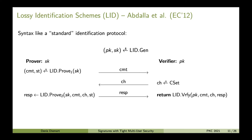We have a prover that holds a secret key and a verifier that holds a public key. The prover computes a commitment and sends it to the verifier. The verifier chooses a challenge uniformly at random and sends it to the prover. The prover then computes a response from the secret key, the commitment, and the challenge, and sends it to the verifier. The verifier outputs 1 if this transcript — commitment, challenge, response — is valid under the public key, and 0 otherwise.